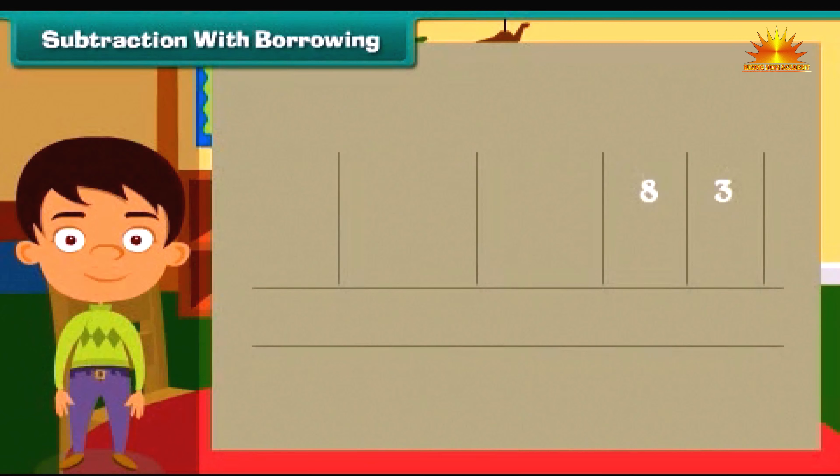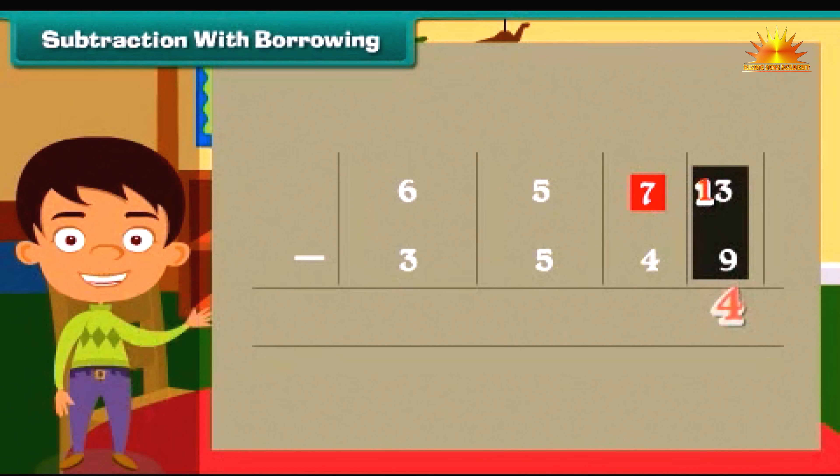We again start from one's column. Since three is smaller than nine, so we will borrow one ten from eight. Therefore, three will become thirteen and eight will become seven. Subtract nine from thirteen, we get four. Subtract tens. Seven minus four is three.